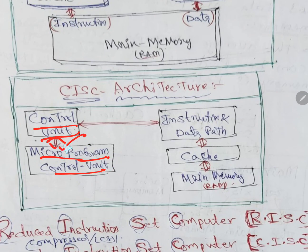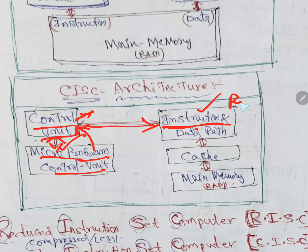That will be bidirectional. Instructions through the micro-program will go to the control unit, and the control unit will perform tasks according to the instructions. Instruction data — rules, commands, formulas, what to do — will travel via the data path to cache memory. Cache memory is the fastest memory, bigger than RAM, and it will be inside the processor — the brain of the computer. That will travel to main memory, which is nothing but RAM.